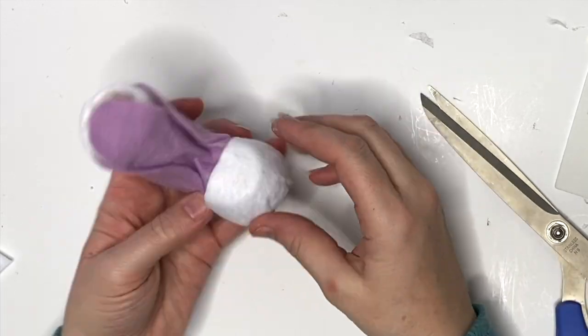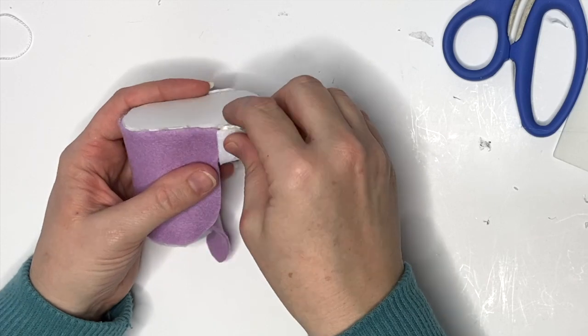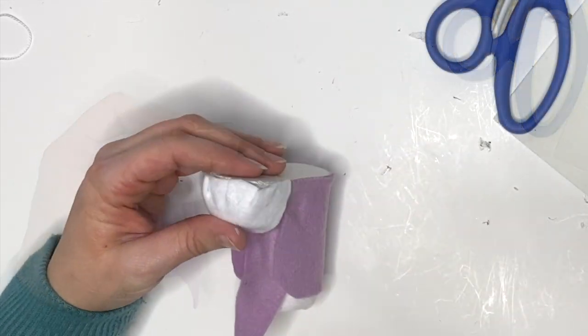So you just glue down all of these tabs. I kind of messed that up. You can press it out a little bit. We're just gonna repeat that on the other side.